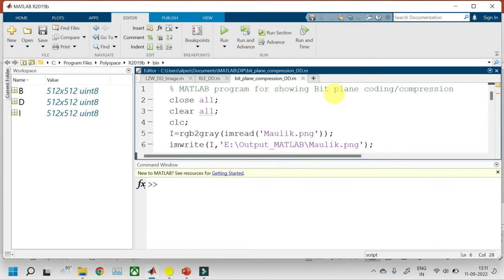Let us implement bit plane coding or bit plane compression in MATLAB. So this program is the same program that we saw for the 12th video class. I have made slight modifications of writing uncompressed image and the compressed image to the hard disk so that we can realize what compression we have achieved.